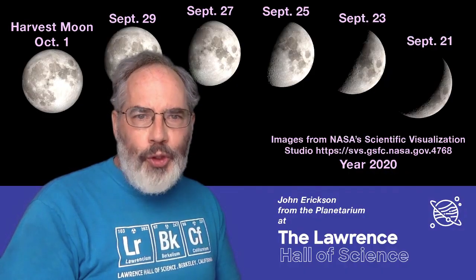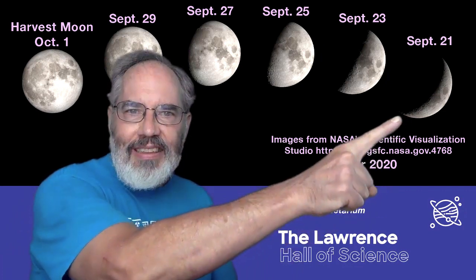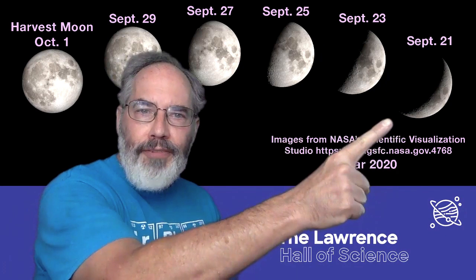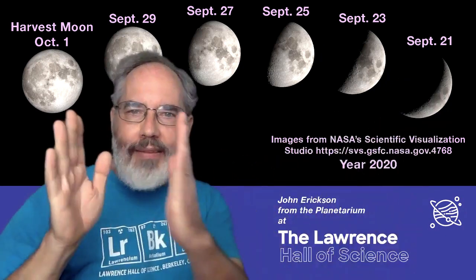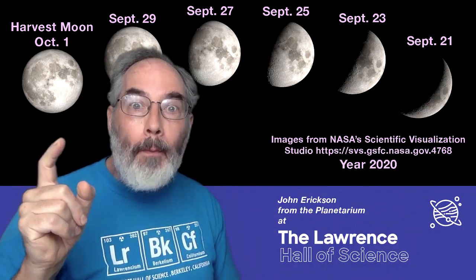So whenever you observe the moon, you can follow its position as it changes, you can follow its shape as it seems to change, and you can follow its size as it appears sometimes a little wider and sometimes a little thinner. And remember, the day after the harvest moon, look at it again and see how close it is to the planet Mars.